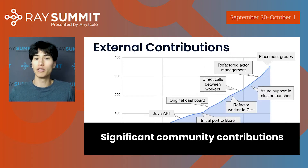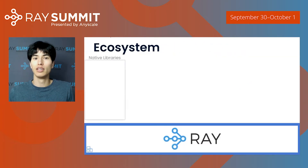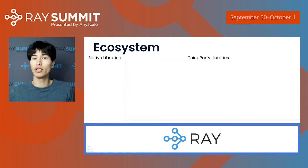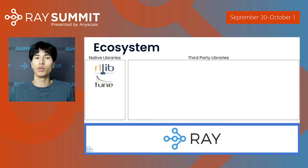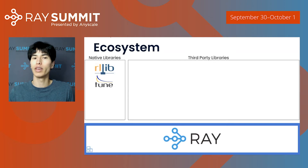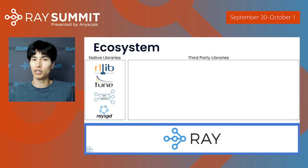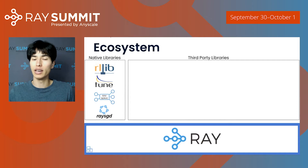Another area where we've seen enormous growth over the past couple of months is in the ecosystem sitting on top of Ray. Some of these are libraries we develop as part of Ray; others are third-party libraries that integrate with Ray. Two of the first libraries we began building were RLlib for reinforcement learning and Tune for hyperparameter search, and today these are among the most popular libraries for those tasks. More recently, we began working on libraries for model serving, deploying models in production, and distributed training.